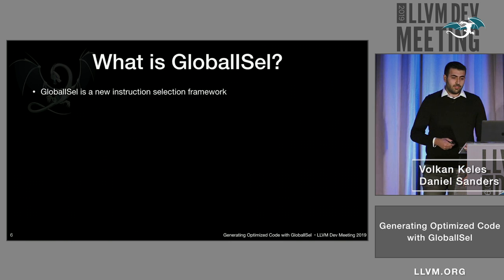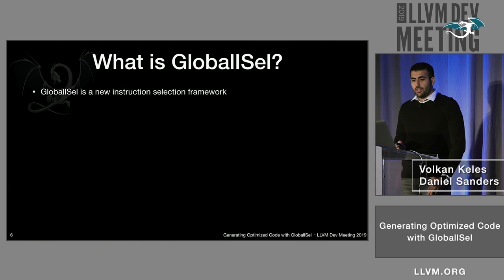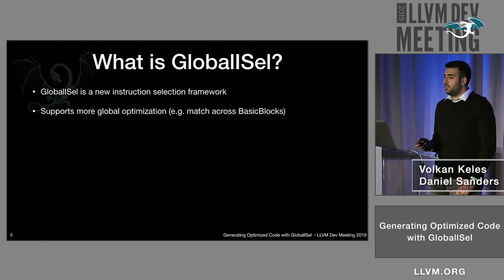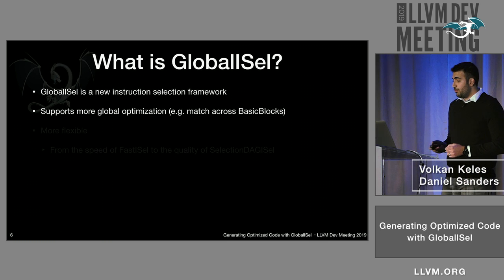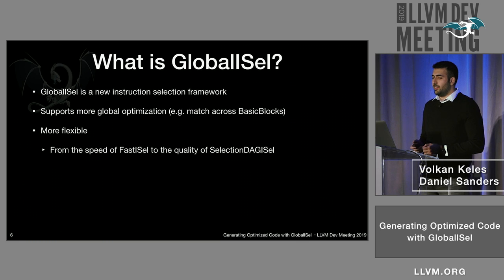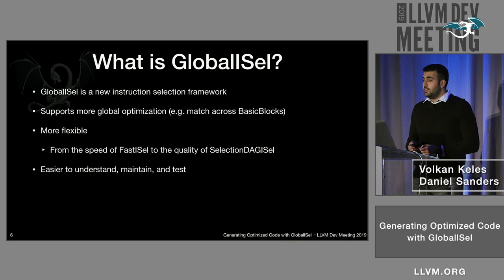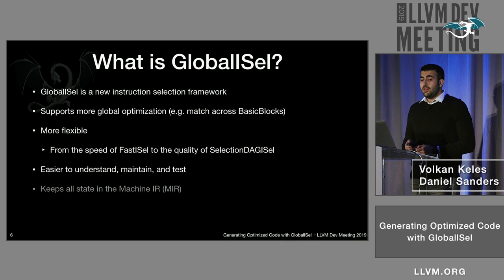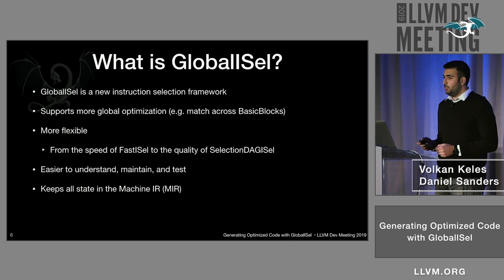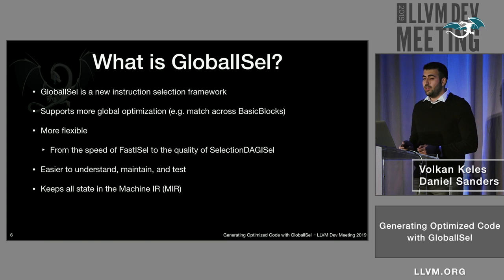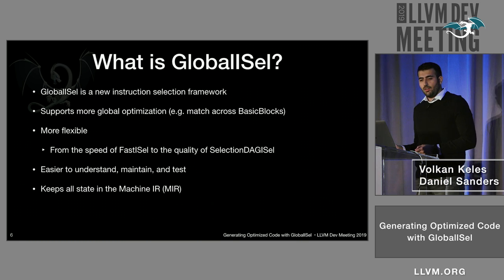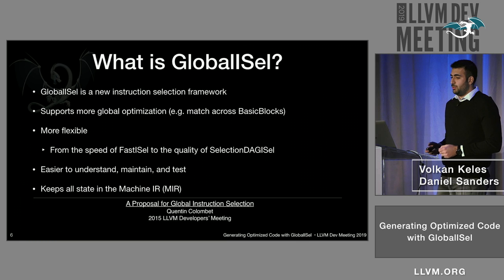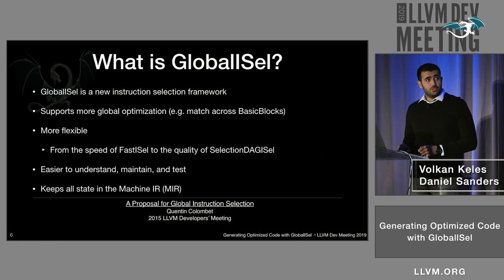What is Global ISel? Global ISel is a new instruction selection framework in LLVM. It supports more global optimizations — unlike SelectionDAG ISel, Global ISel is able to match across basic blocks. It is more flexible: instruction selection can range from the speed of fast ISel to the quality of SelectionDAG ISel. It is also easier to understand, maintain, and test. Finally, it keeps all state in the machine IR. You can dump the machine function at any point and it accurately reflects the program — there's no need to look at temporary information for each pass. For more details, you can watch Quentin's talk from the 2015 LLVM developers' meeting, 'A Proposal for Global Instruction Selection.'